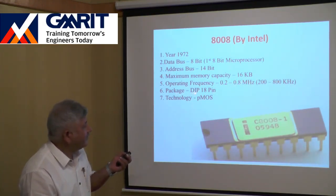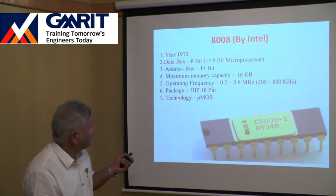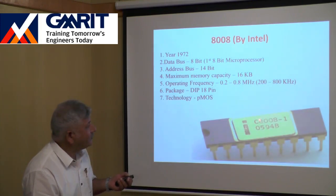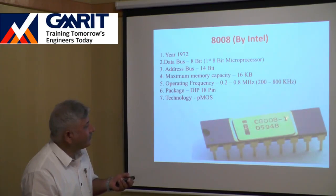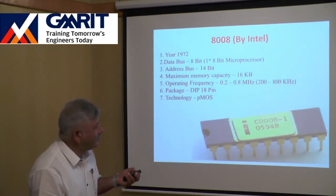The 8008's operating frequency was 0.2 to 0.8 MHz. The package was again a dual-in-line package with 18 pins, and the technology was still PMOS. Intel launched the 8008 in two versions: 8008-1 and 8008-2.